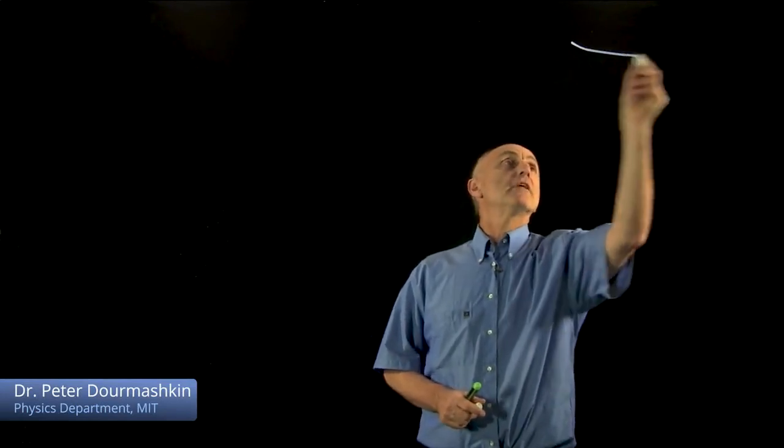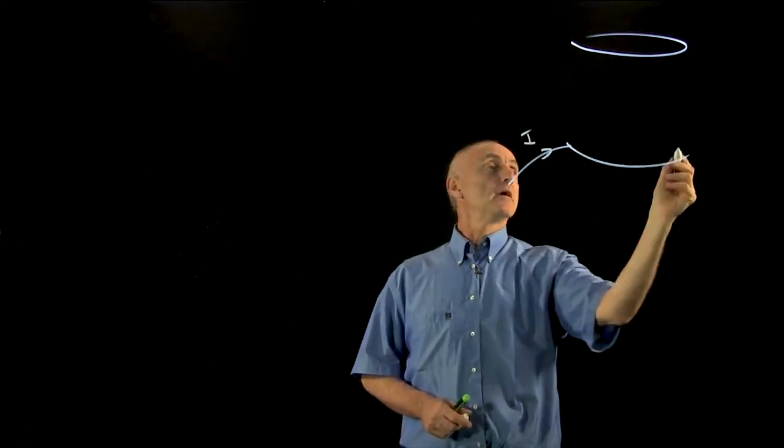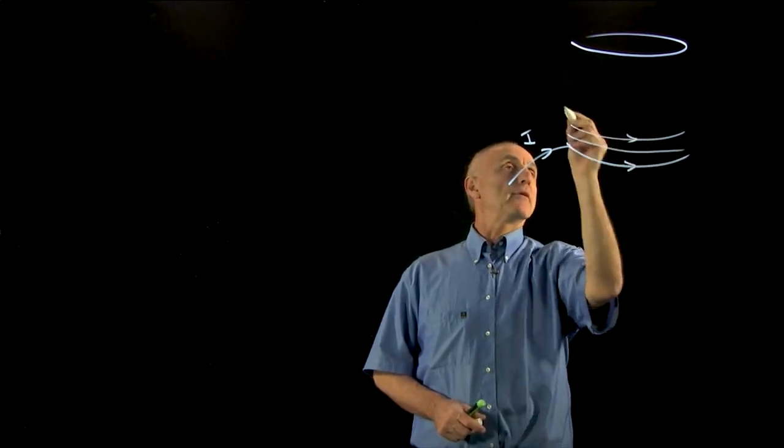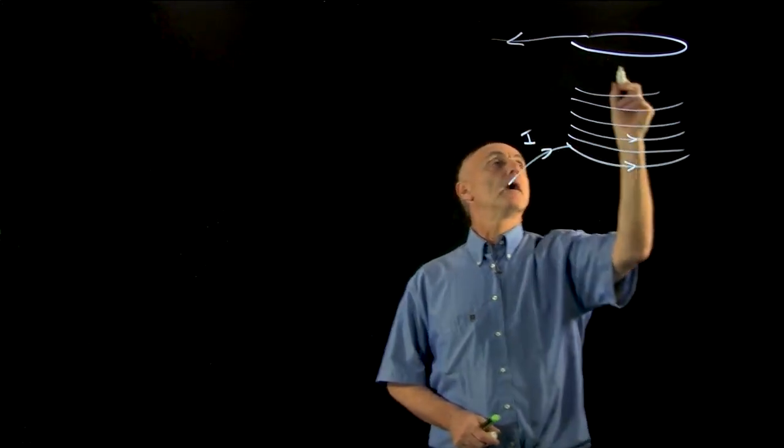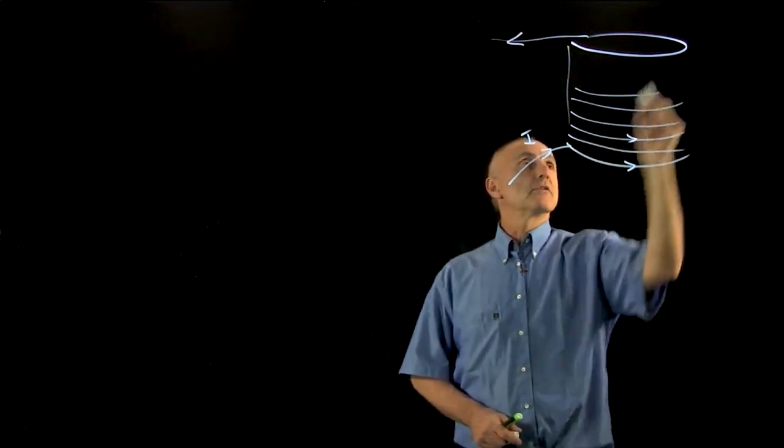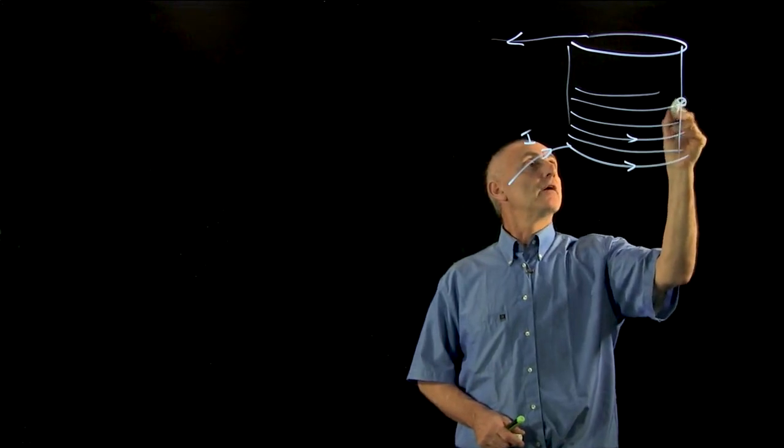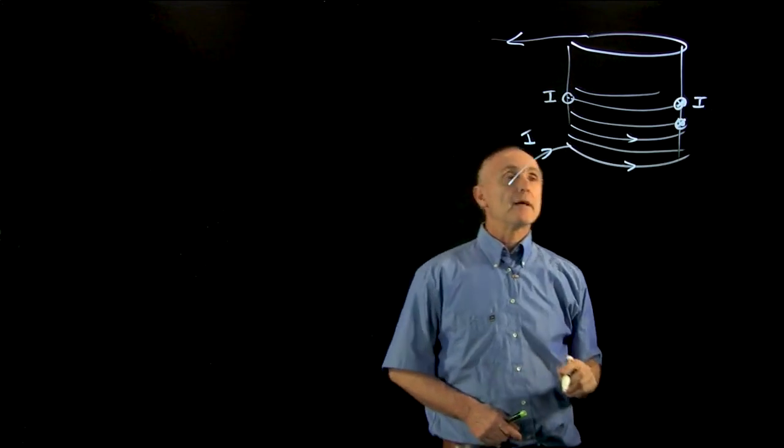Our second example of energy conservation that we want to look at is a solenoid. This is just going to be a model of an infinite solenoid, a current coming in, wrapping around. Our current wraps around n times and eventually comes out. This is just a sketch of it. On this side, our current is going in, and on this side, our current looks like that.